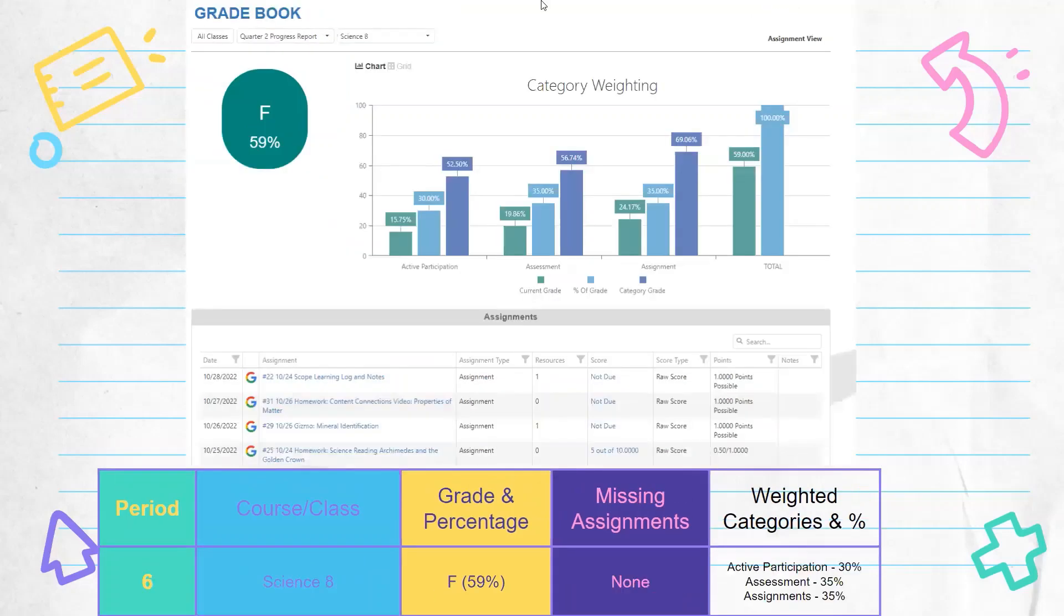And then one more class, this student, I mean, excuse me, this teacher's grade book is linked to Google Classroom. You can see by the G's there. And they are weighting grades. So we are going to take a look at that. Oops, I didn't mean to go that far. So for the weighting, there's three categories, active participation, assessments, and assignments.